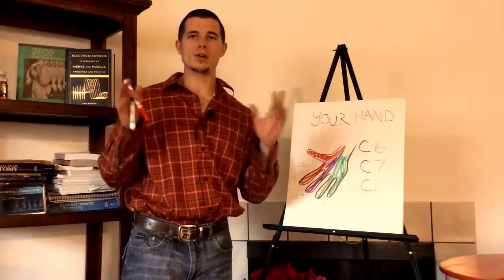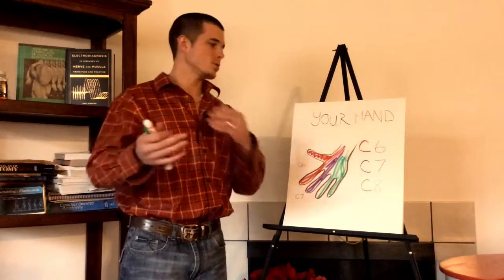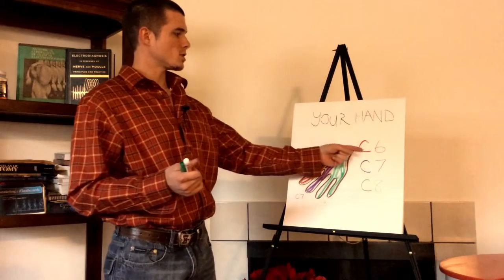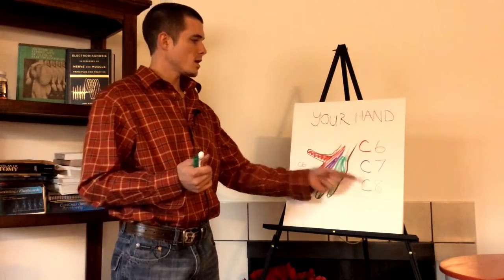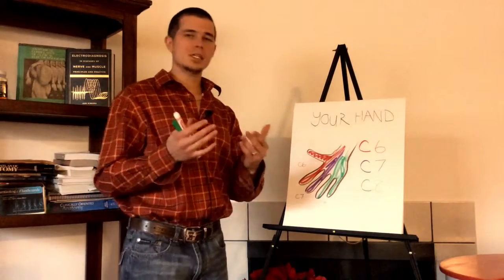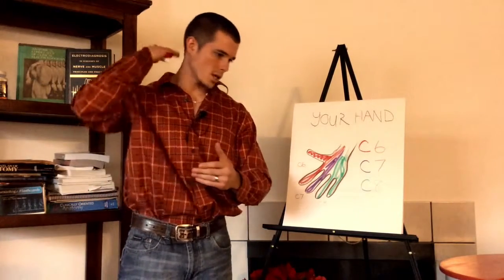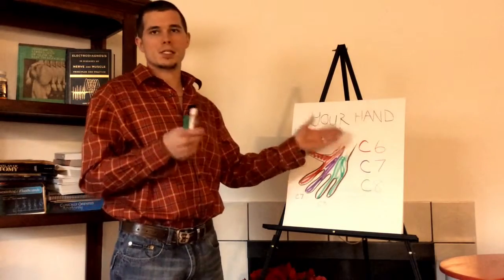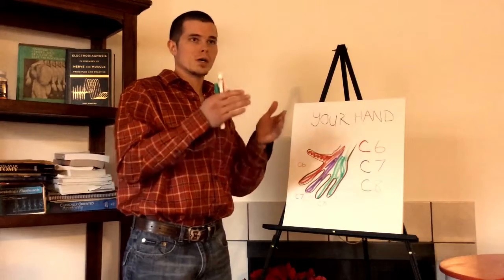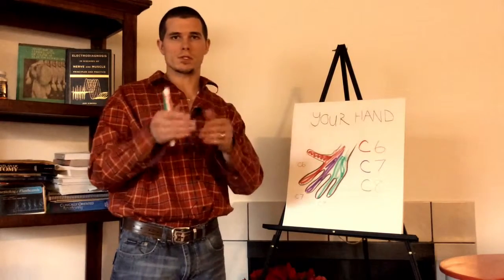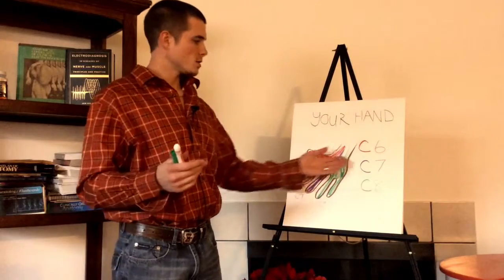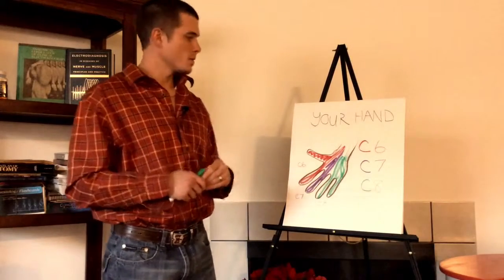First things first, there are eight nerves in the neck that contribute to feeling and movement within the arm itself. The biggest ones are C6, C7, C8, and they're termed like that because the C stands for cervical, which means the spine in the neck. And C6 is a short term for the sixth cervical nerve. So C6 is the sixth cervical nerve or the sixth nerve in the neck, seventh nerve in the neck, eighth nerve in the neck.